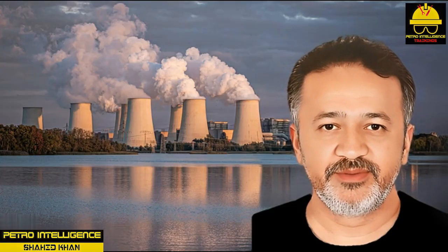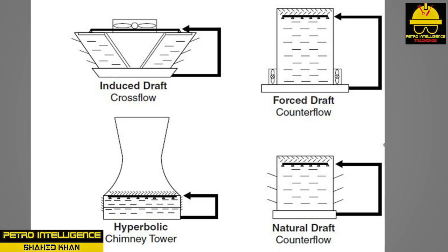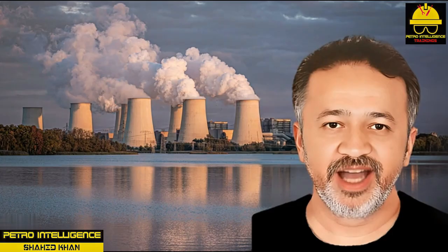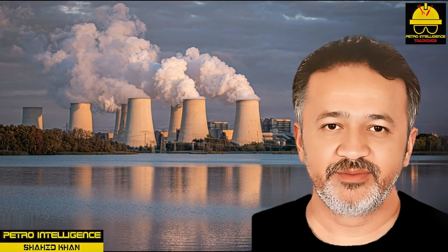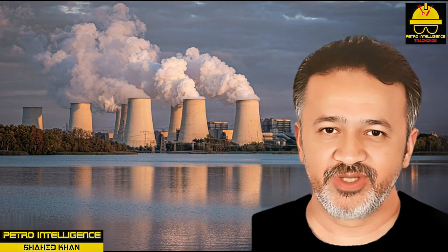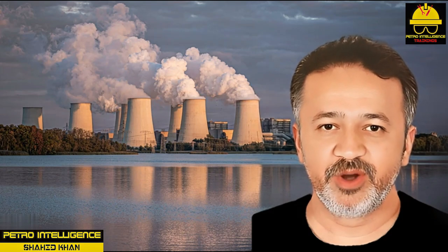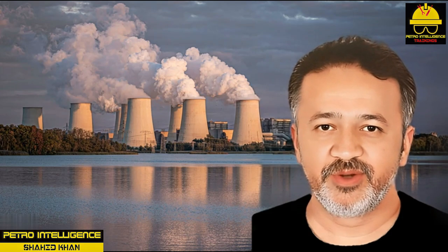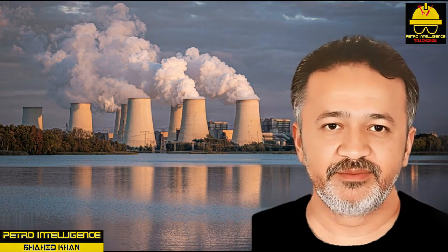Cooling tower symbols: each type of cooling tower can be represented by a symbol. A cooling tower is a heat transfer device used by industry to cool hot water for reuse in process systems by evaporation and sensible heat loss.